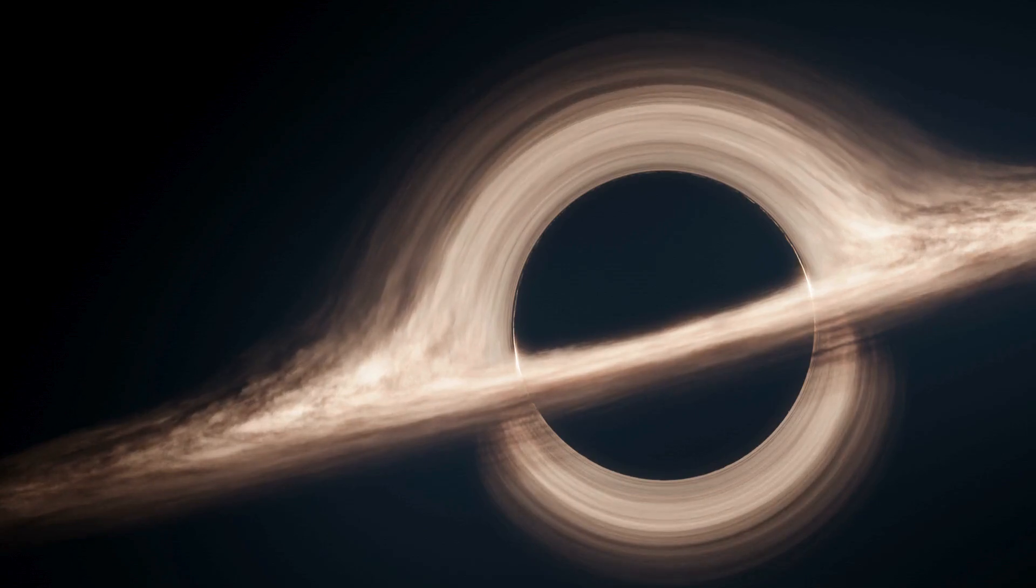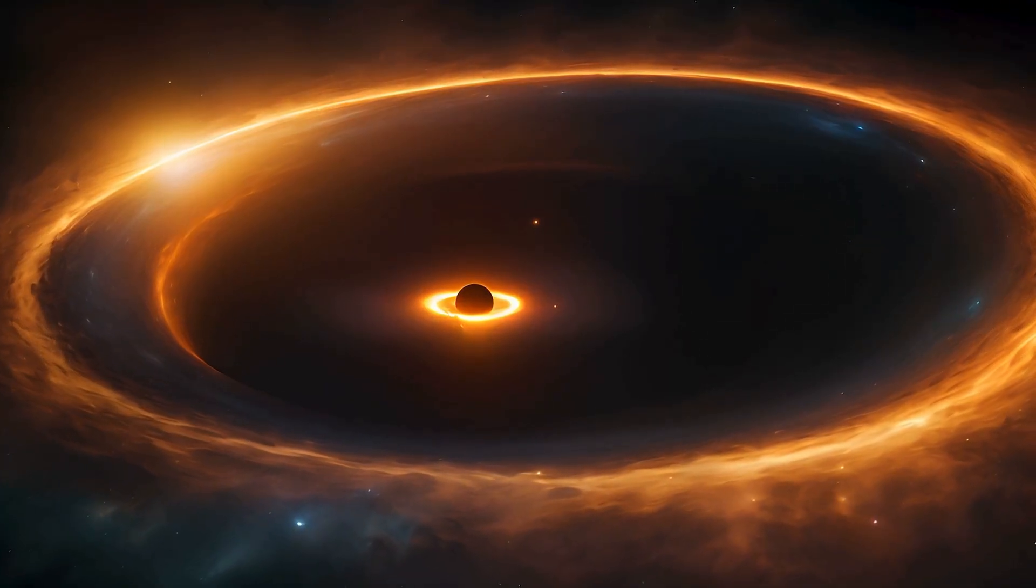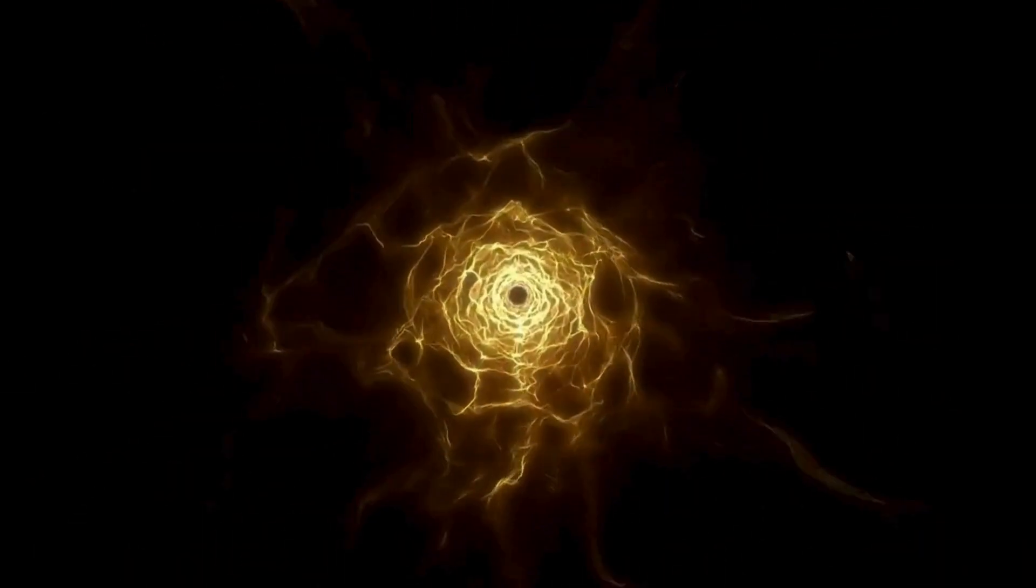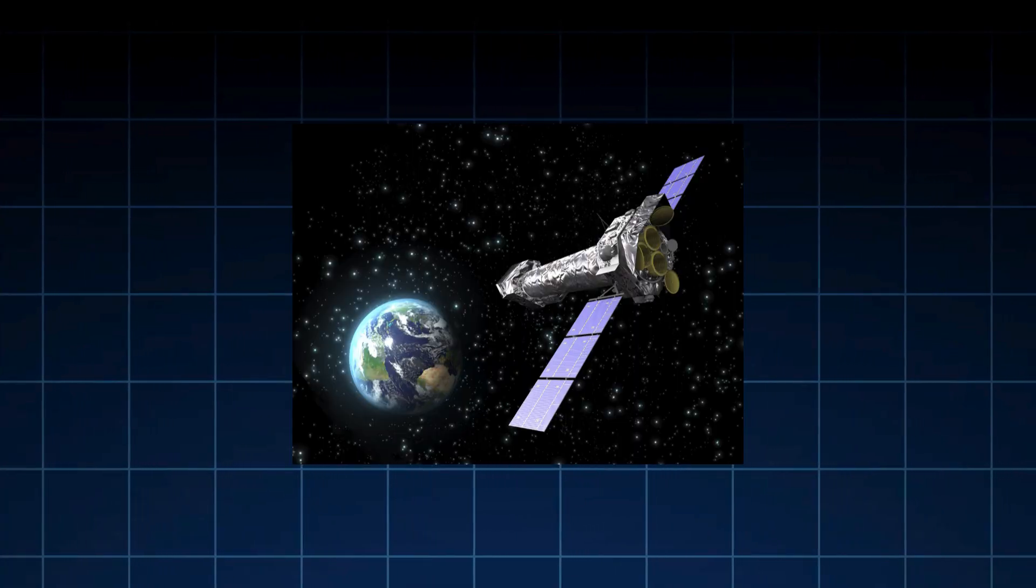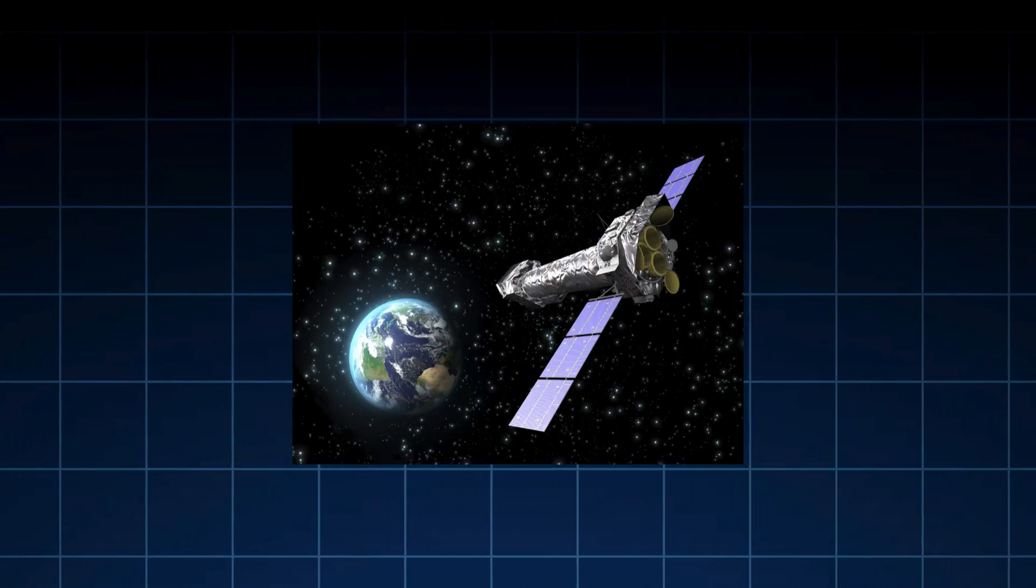You might be thinking, if black holes are invisible, how do we find them? Great question! They reveal themselves through their effects on nearby matter. When a black hole pulls in gas or dust, it forms an accretion disk, like water swirling down a drain. This disk heats up to millions of degrees, emitting x-rays we can detect with telescopes like NASA's Chandra or ESA's XMM-Newton.